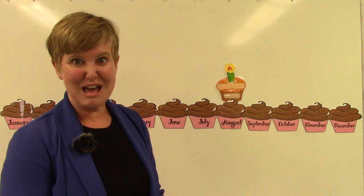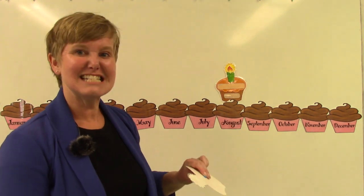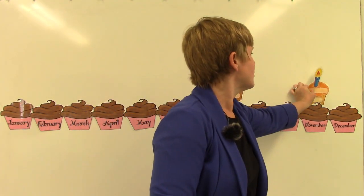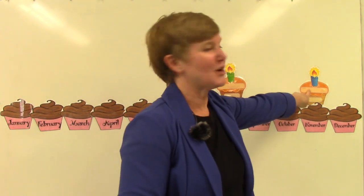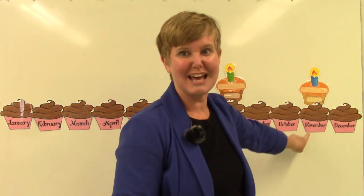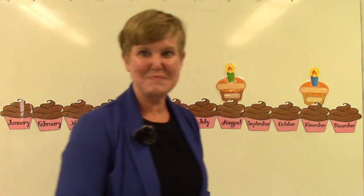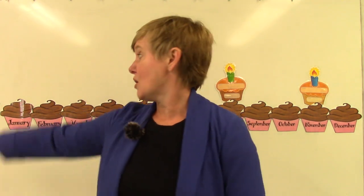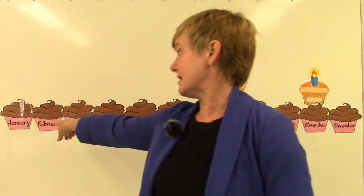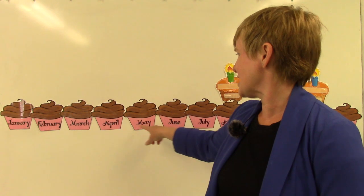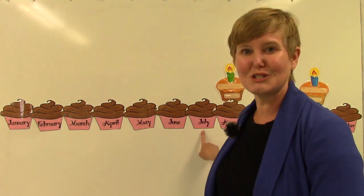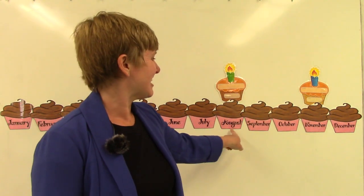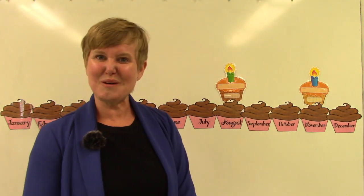Next I am going to graph my dad's birthday. My dad's birthday is in November so I am going to put a birthday cupcake right above November. So if we were to look at our graph we wouldn't have any in January, February, March, April, May, June, or July. We would have our first birthday in August and then one in November.